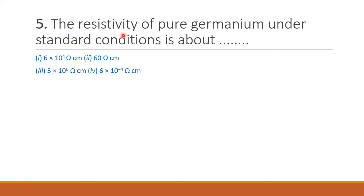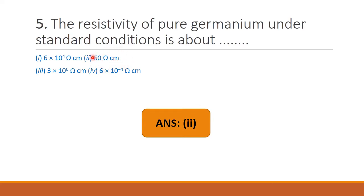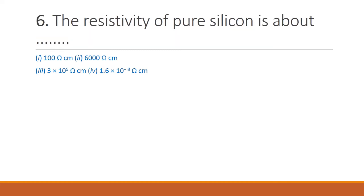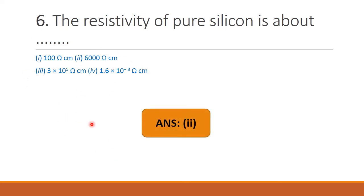Next question: the resistivity of pure germanium under standard conditions is about — the resistivity for pure germanium is 60 ohm-centimeter, so 60 ohm-centimeter is the correct answer. Next question: the resistivity of pure silicon is about — option 1: 100 ohm-centimeter, option 2: 6000 ohm-centimeter, option 3: 3×10⁵ ohm-centimeter, option 4: 1.6×10⁻⁸ ohm-centimeter. The correct answer is 6000 ohm-centimeter, so option 2 is the right answer.